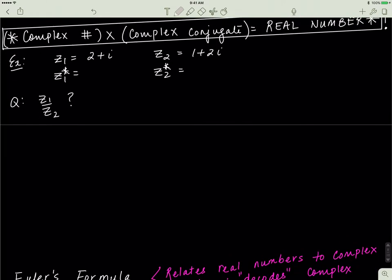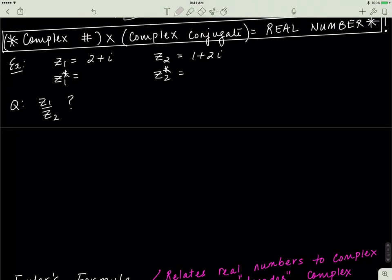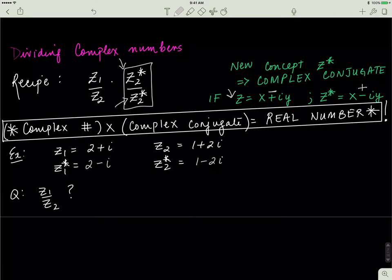Here I have z1 equal to 2 plus i and z2 equal to 1 plus 2i. The complex conjugate of z1 is just the same number with the opposite sign in front of i. For z2, the complex conjugate follows the same rule. The question asks for z1 divided by z2, but remember the recipe: to divide, multiply by the complex conjugate of the denominator.